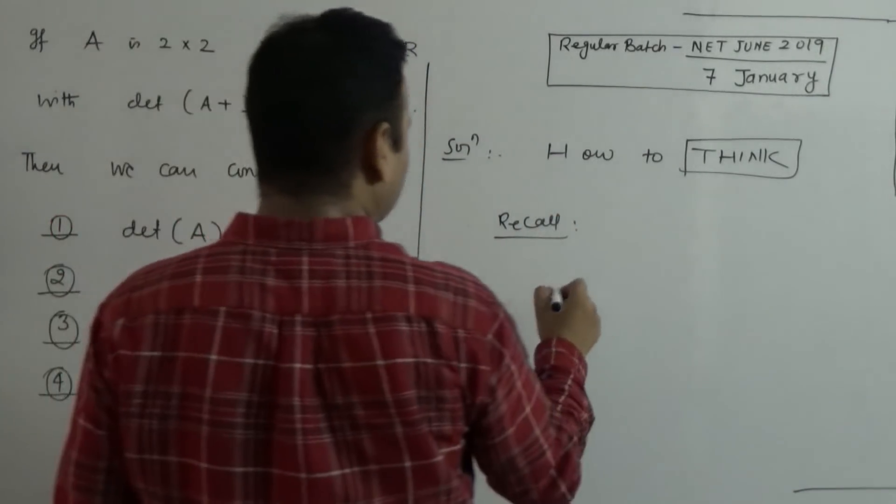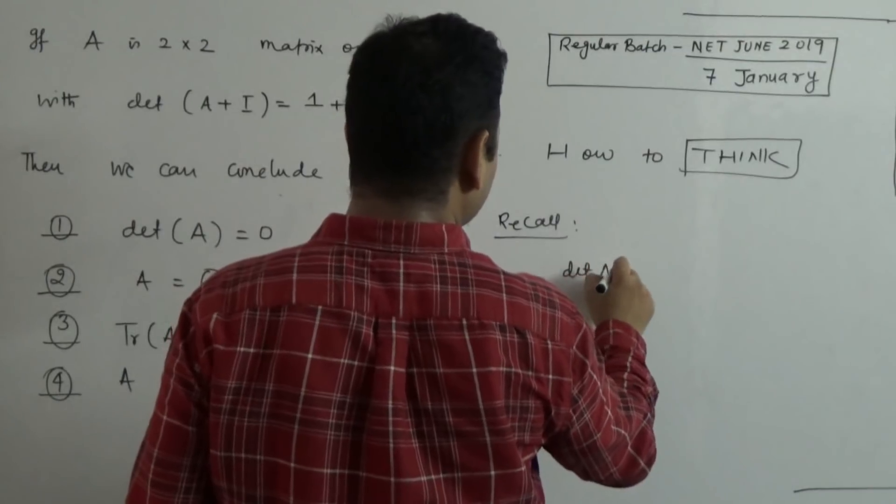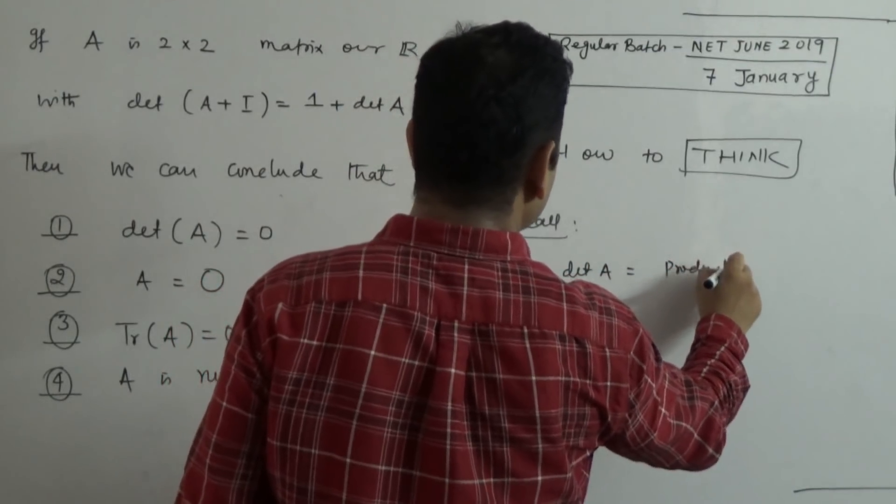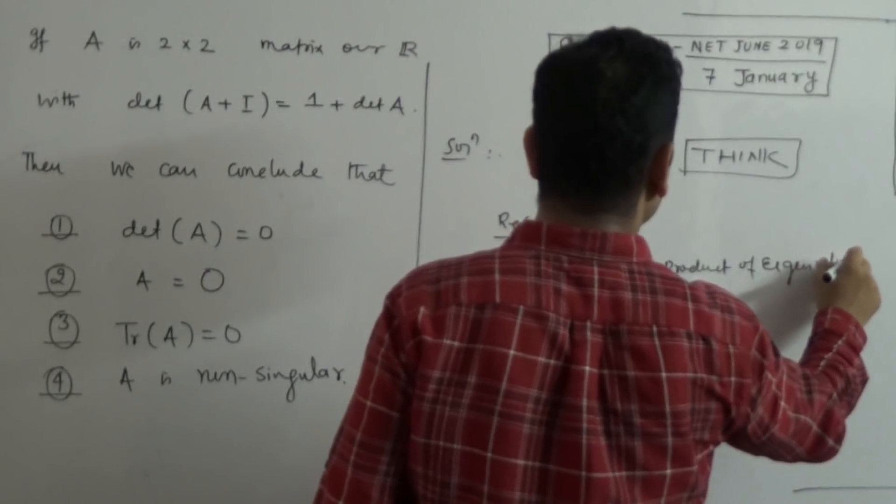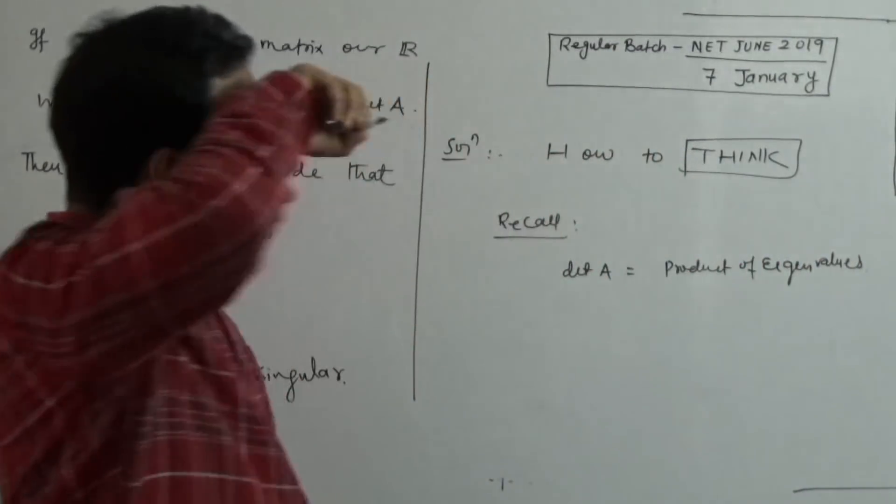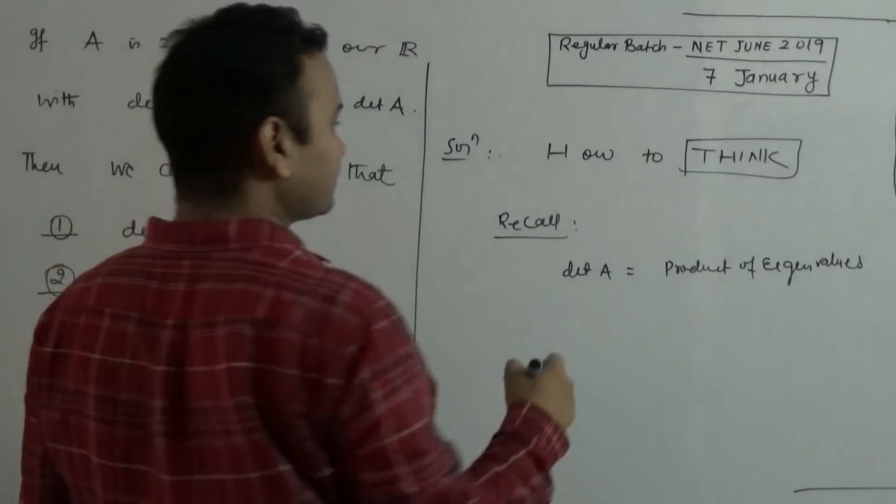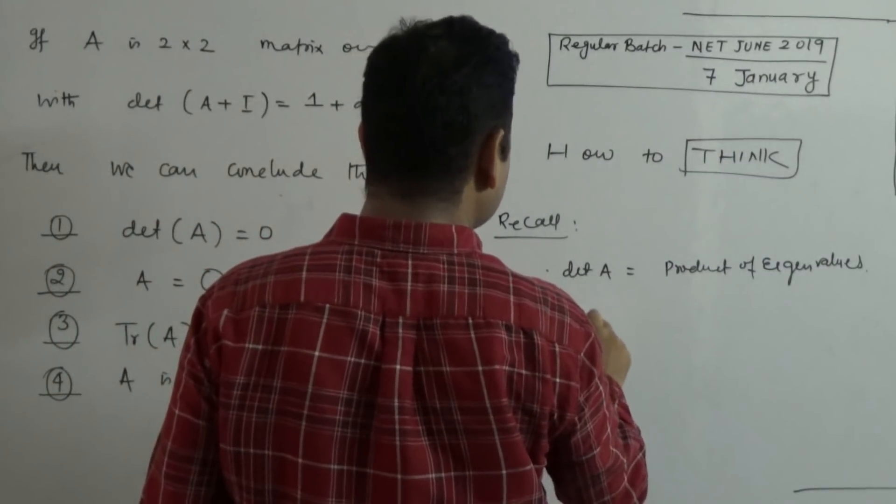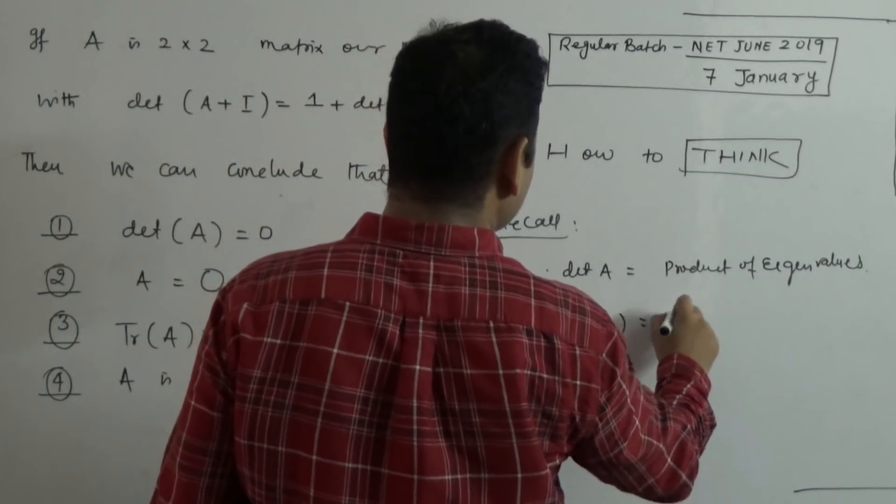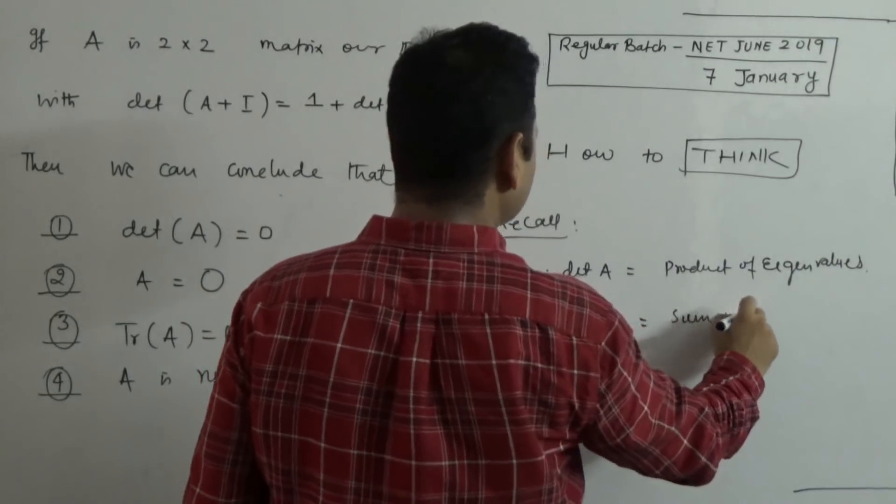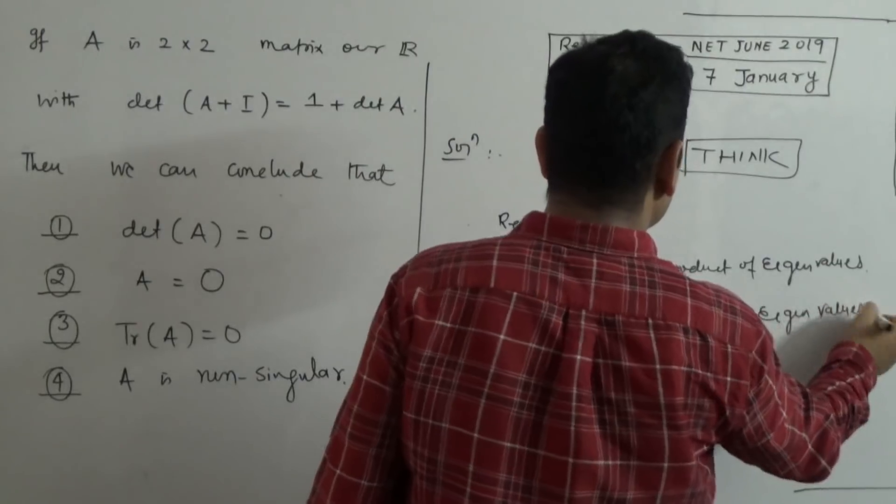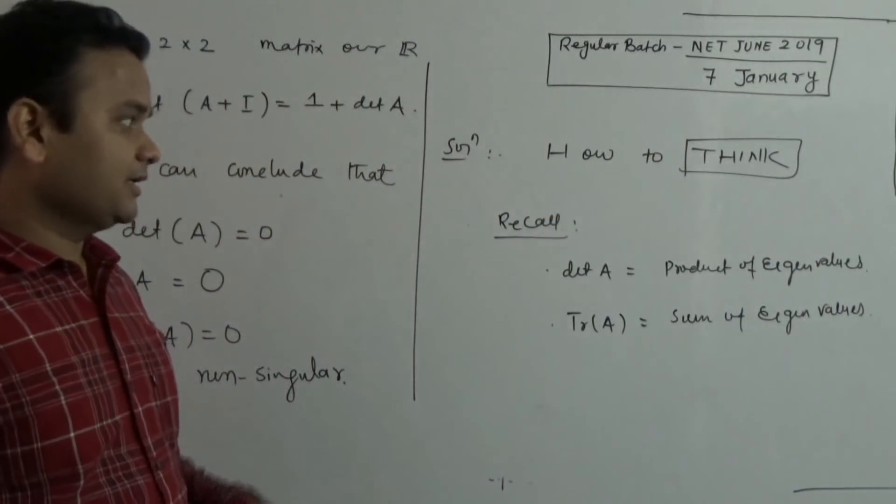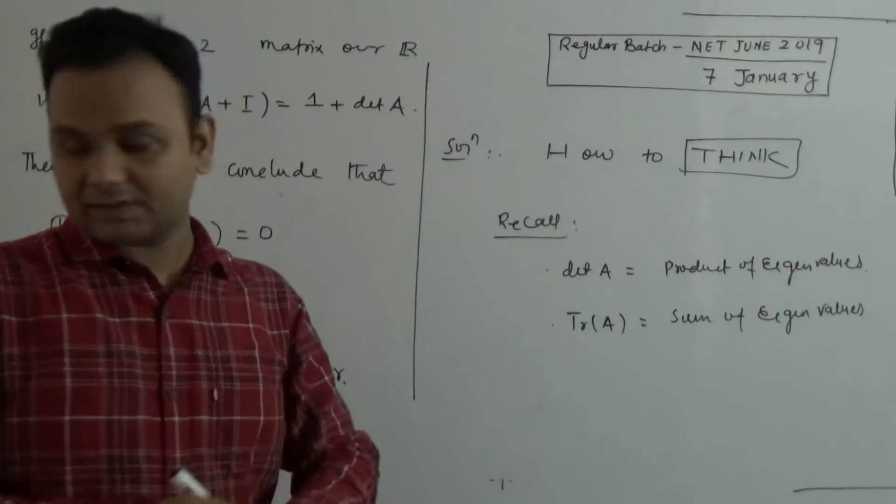Determinant of a matrix is nothing but product of eigenvalues. And what is the trace of the matrix? The trace of the matrix is nothing but sum of eigenvalues. So, these are all things that we can tell you. Now, if you know these things, you can easily answer this question.